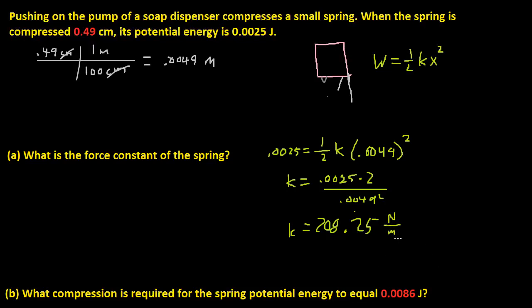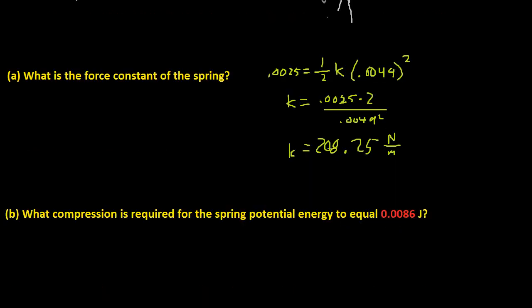So if you have an answer blank, and it's asking for kilonewtons per meter, we just divide it by 100. So 208.25 newtons per meter. And we want kilonewtons per meter. So one kilonewton is equal to 1,000 newtons.